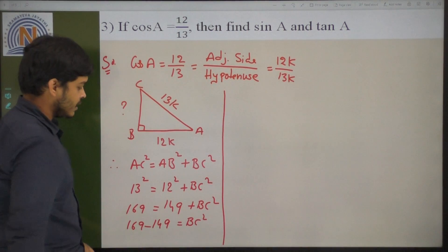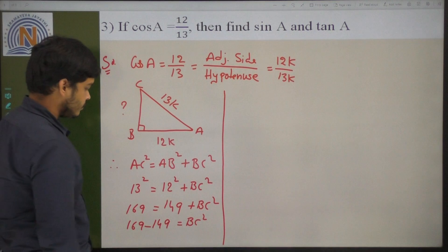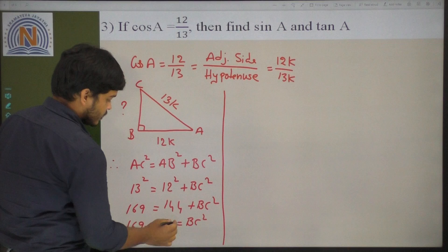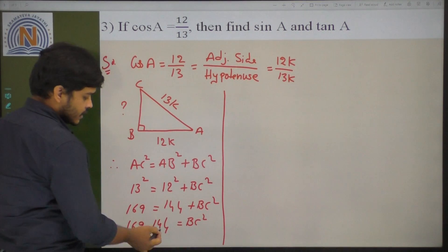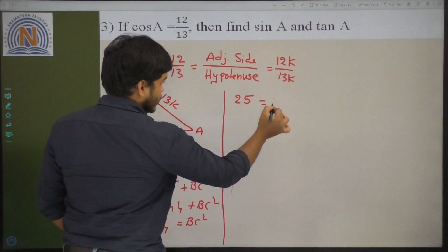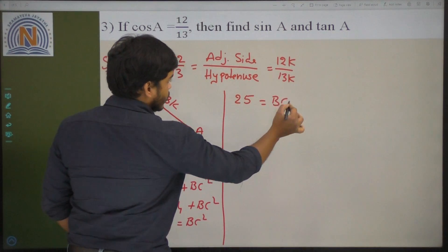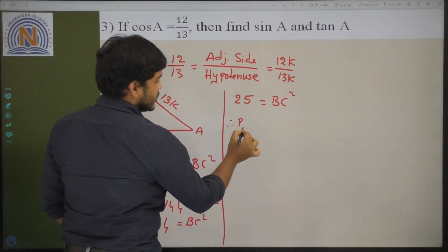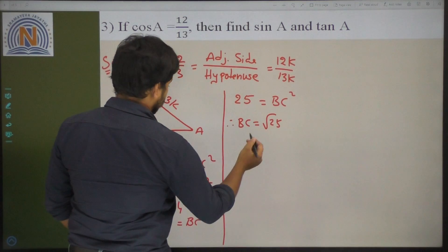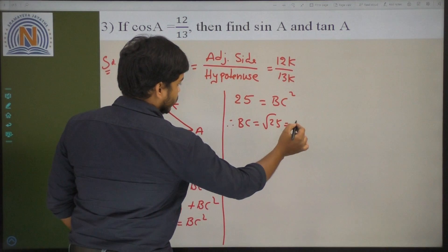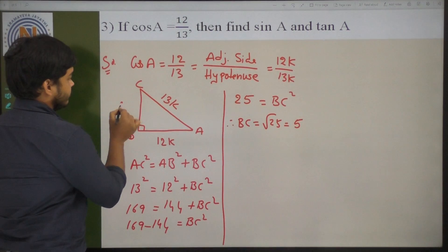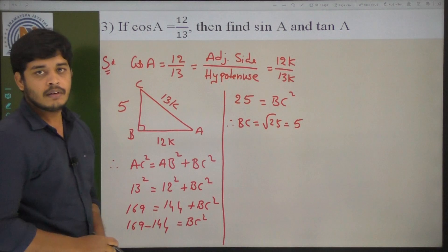So 169 minus 144 is 25, equals BC squared. Therefore BC equals 5. So the BC value is 5.